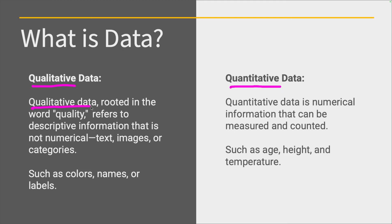So qualitative data, I'm hearing quality. So that's the root, and it's referring to descriptive information that is not numbers, but it is text, images, or categories. The most famous examples would be colors, names, or labels. These are not numbers.